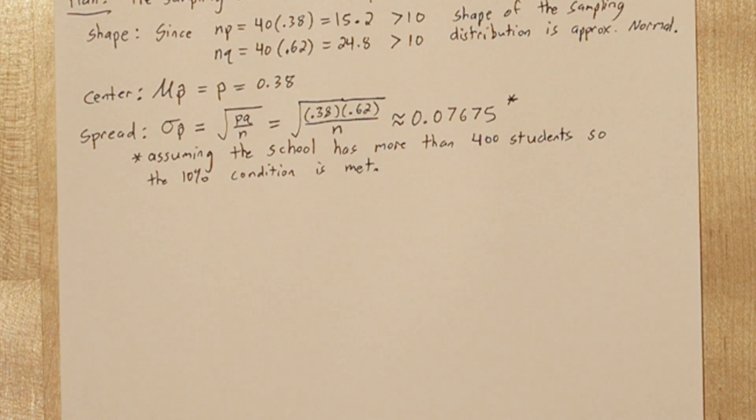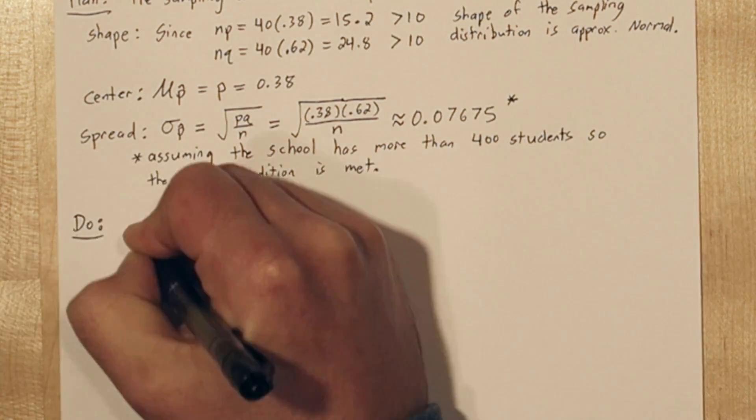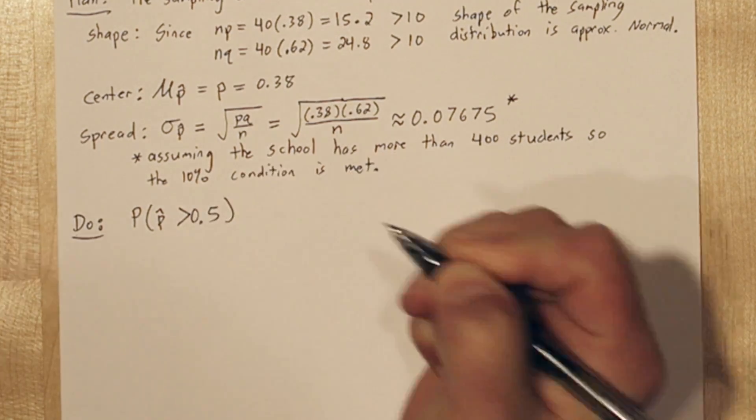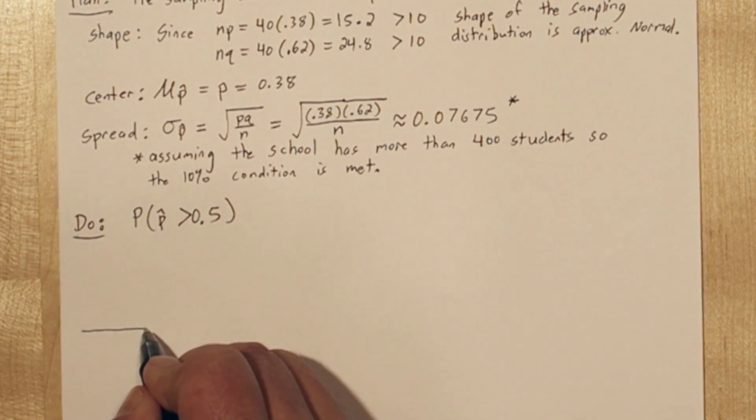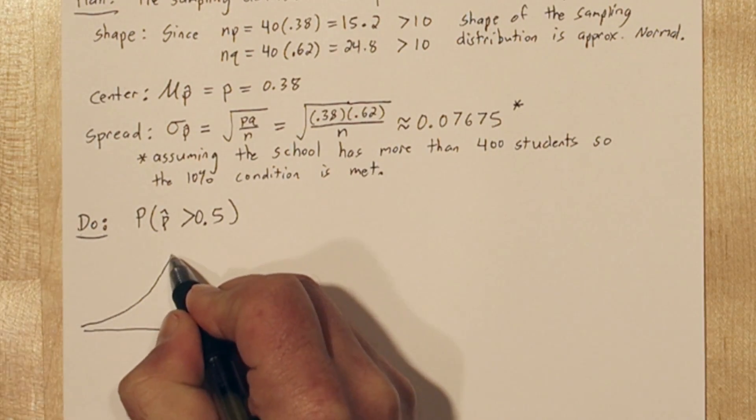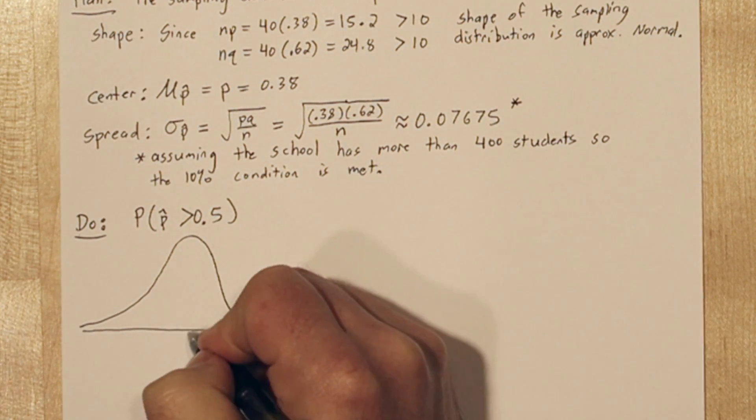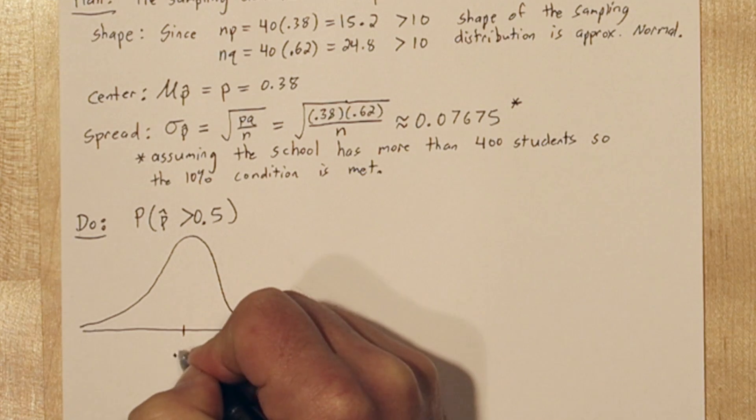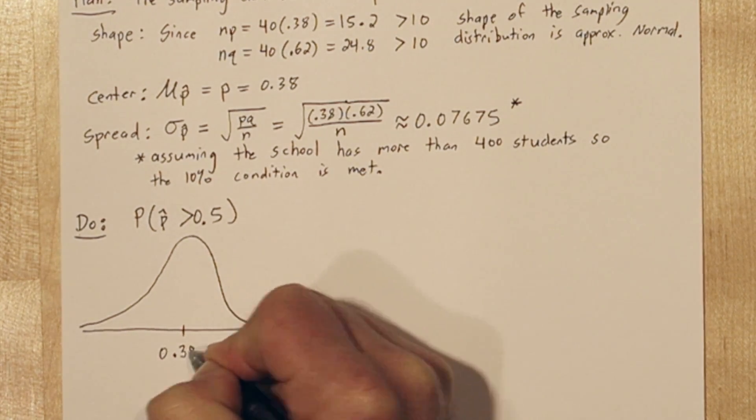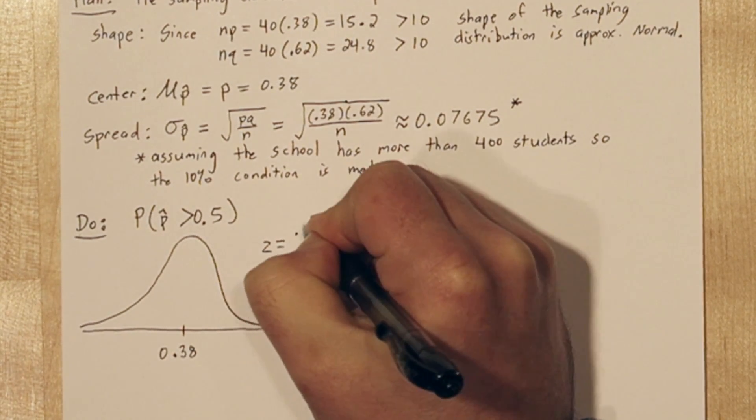Now we're ready to actually do our probability calculation. We're trying to find the probability that p-hat is greater than 0.5. Now since we're allowed to do normal calculations, let's start by drawing a normal curve. The center of the curve is 0.38, the true parameter value, and what we need to do is figure out where 0.5 would be. To do this, we'll calculate the z-score.